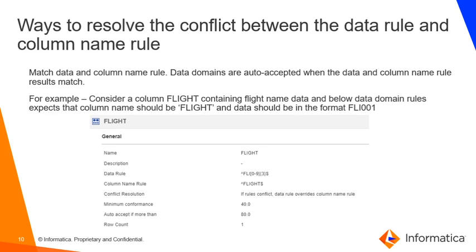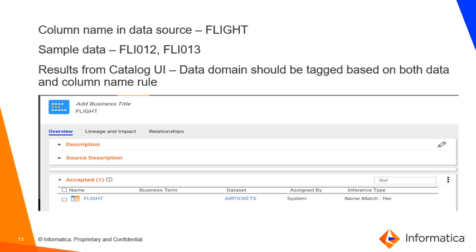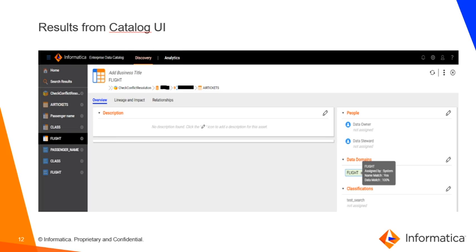The last option is to have both data rule and column name rule validated against the actual data and column name. Here, data domains are auto accepted only if both data rule and column name rule criteria are satisfied. Considering the data domain 'flight,' it is expecting the column name to be 'flight' and data in the format FLI001. We have considered a column 'flight' which exactly matches both the data rule and the column name rule. In the overview tab of the column, hovering over the data domain, we see that it is auto accepted based on both the data rule and the column name rule result.